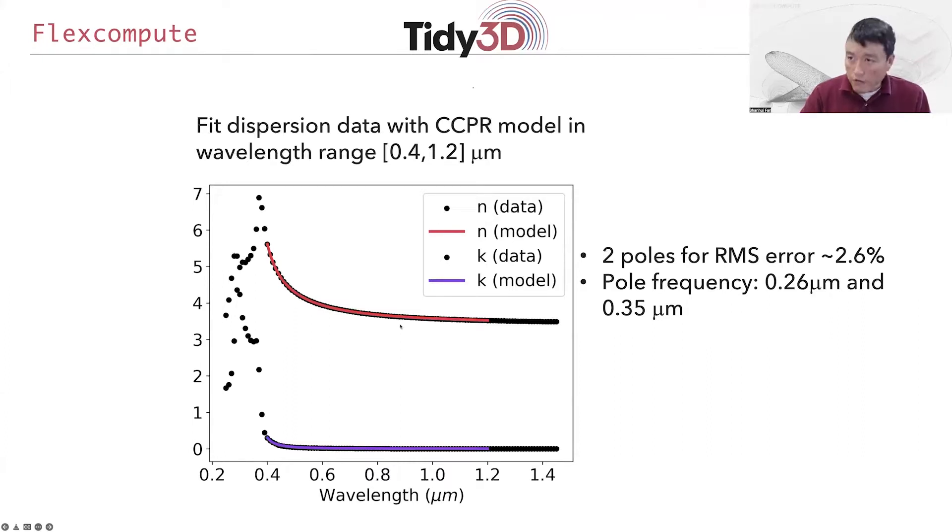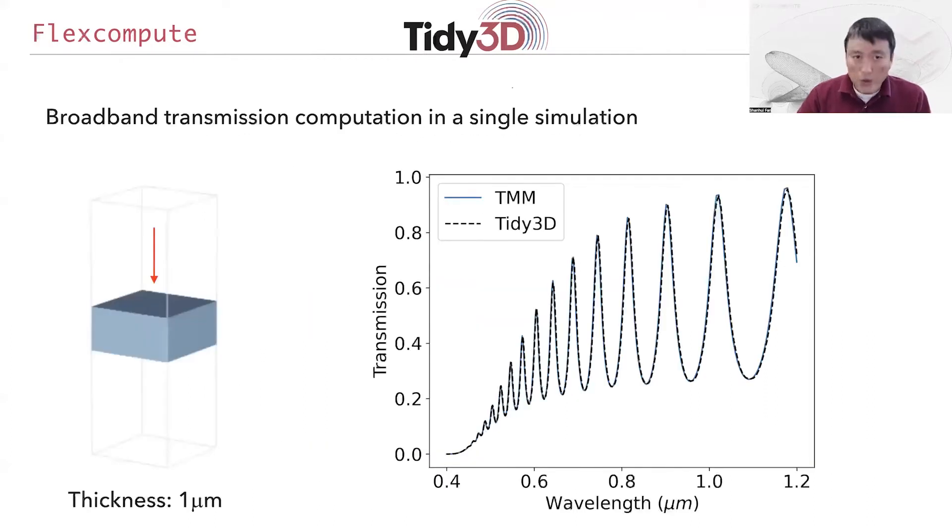One of the key advantages of FDTD method, being a time domain method, is that it allows you to determine the behavior of a structure over a wide range of frequencies or wavelengths in a single simulation. And once you have the capability to describe the dispersive material, as we have described above, then it is possible to perform this kind of computation for dispersive structures in a single simulation as well.